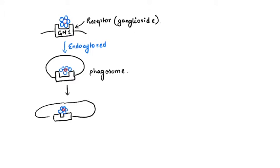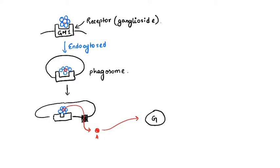Once it fuses with the ER, the ER has transporters through which the A subunit moves into the cytosol. After the A subunit moves into the cytosol, the A subunit attaches an ADP ribose to an amino acid on a G protein.